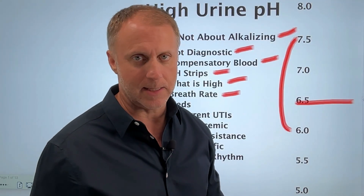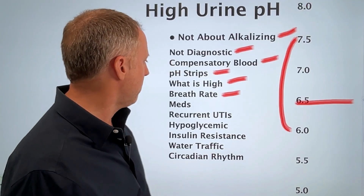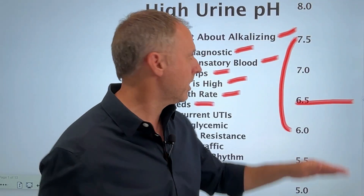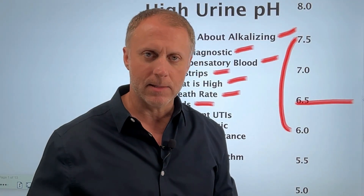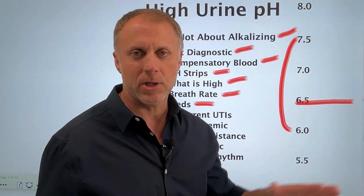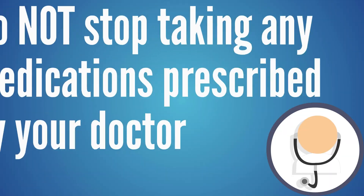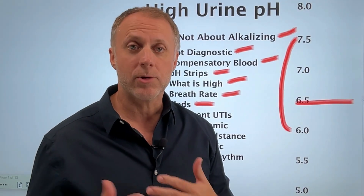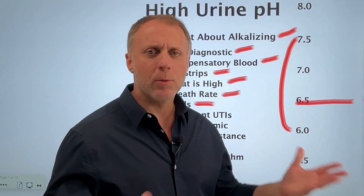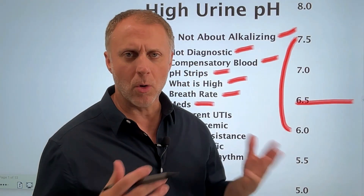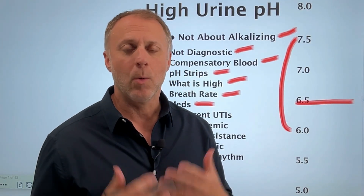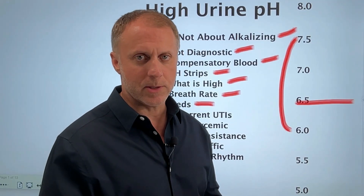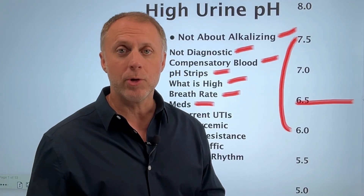When looking at urine pH, keep in mind that some medications have the ability to alter it. If you have a very high urine pH and you're taking medications, ask your doctor if that medication can affect your urine pH. That doesn't mean you need to stop taking it — you just want to understand if the medication is causing the pH to go high. Sometimes it just has to do with a person's physiology, and they simply lean toward a higher urine pH.